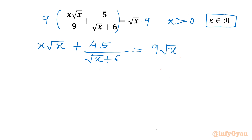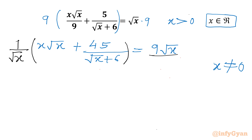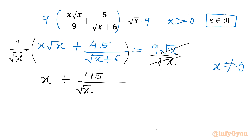From the original equation, x equal to 0 is not a solution, so I can divide both sides by √x. Multiplying by 1 over √x and cancelling √x from numerator and denominator, we get x plus 45 divided by (√x times √x plus 6) equal to 9.